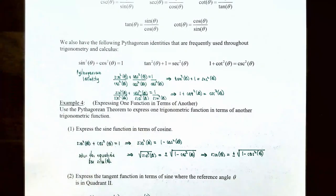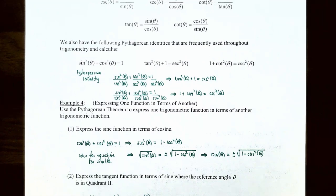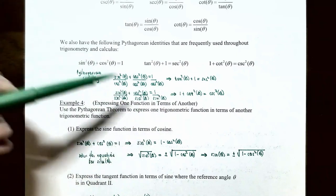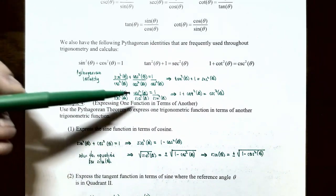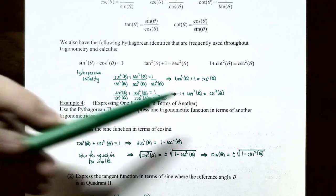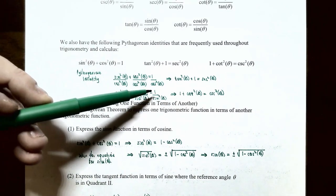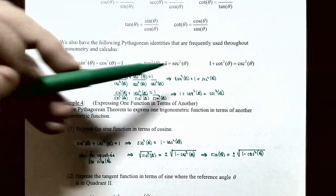That's derived by dividing all terms of sine squared theta plus cosine squared theta equals 1 by cosine squared of theta. If instead you divide all terms by sine squared of theta, the first term sine squared over sine squared gives 1, and cosine squared over sine squared gives cotangent squared of theta. On the right, 1 over sine squared of theta is cosecant squared of theta. So 1 plus cotangent squared of theta equals cosecant squared of theta. These three equations — sine squared plus cosine squared equals 1, tangent squared plus 1 equals secant squared, and 1 plus cotangent squared equals cosecant squared — are called the Pythagorean identities.